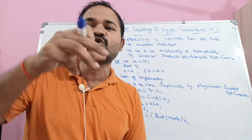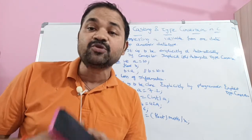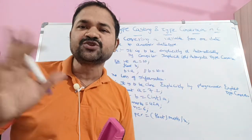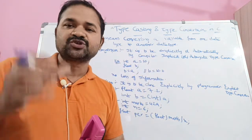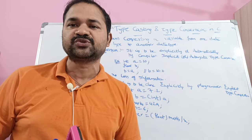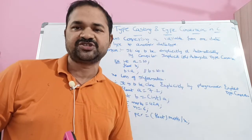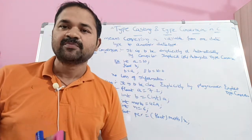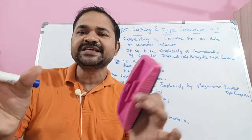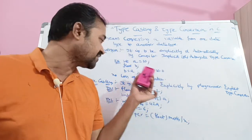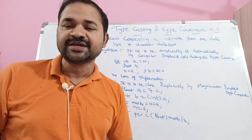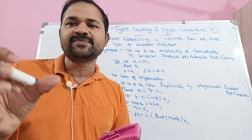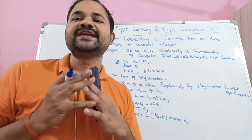So, A holds value 10 and it is converted to 10.0 and stored in the float variable B. There is no change in A — A remains 10, and B stores 10.0. There is no loss of information when type conversion is performed. This is a very important point.